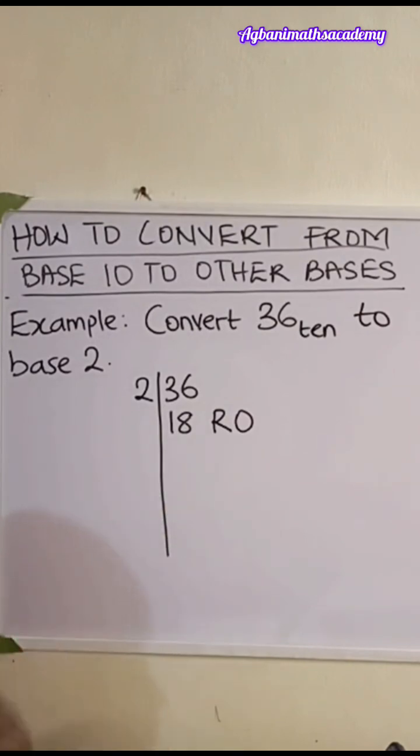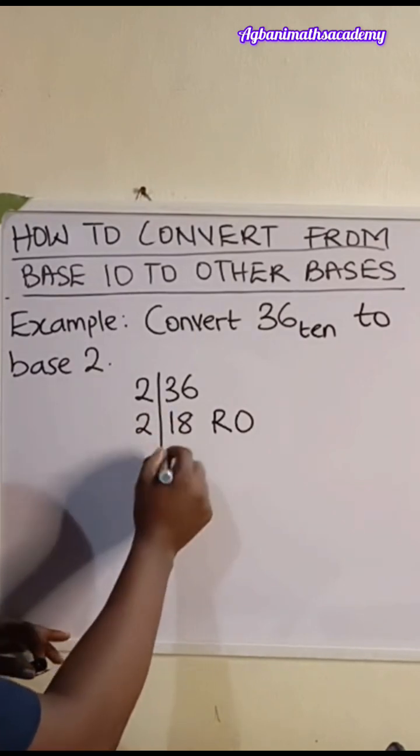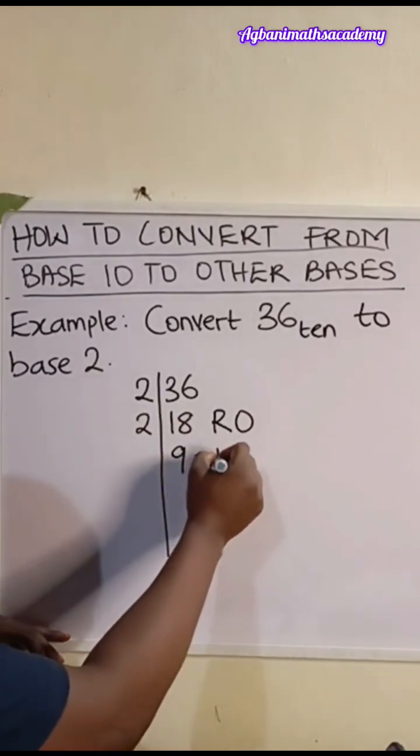Remember, we are breaking it down repeatedly by 2. So we divide again by 2. 18 divided by 2 is going to give us 9, remainder 0.